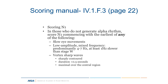When scoring it's important to know exactly what the definitions are. These are all from the scoring manual, version 2.5, with page numbers and section references. For scoring N1, especially in those who don't generate an alpha rhythm, you score N1 commencing with the earliest of: slow eye movements, low amplitude mixed frequency predominantly four to seven hertz, at least one hertz slower than stage W, or vertex sharp waves — sharply contoured, less than half a second, maximal over the central region.